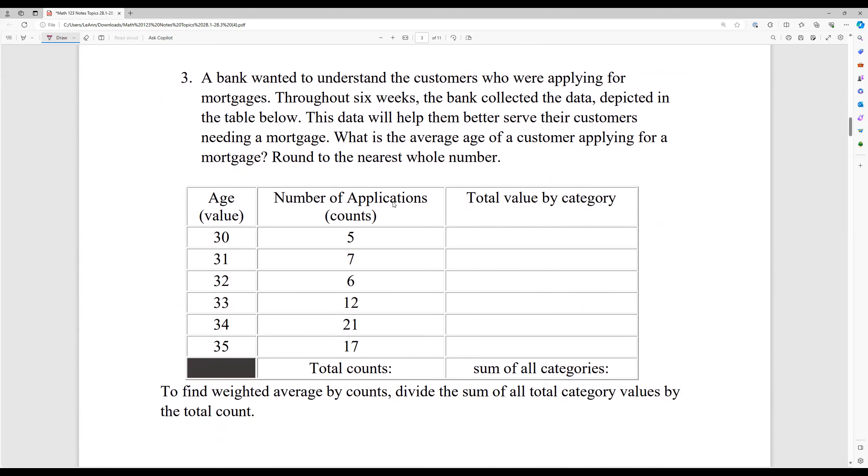So I want to go ahead and look at the page of the first page of examples. So it says a bank wanted to understand the customers who were applying for mortgages throughout six weeks. The bank collected the data depicted in this table below. This data will help them better serve the customers needing a mortgage. What is the average age? So that means whatever we're calculating, when we do our mean here, our weighted average, we're looking for an age value, a total sum of all the ages. That's what we want on top of a customer applying for a mortgage. So, well, if these are all of the ages, we're dividing by people who are actually how many applications. So the number of applications that they got. So that'll give us the average of the age of people who were applicants.